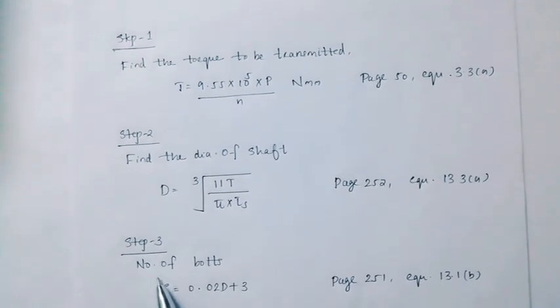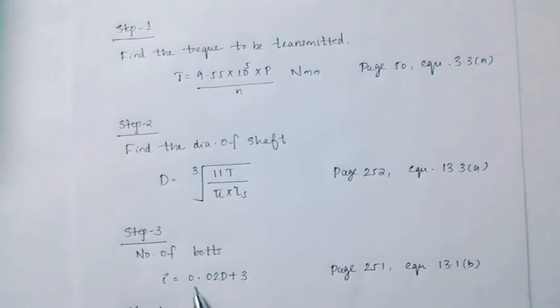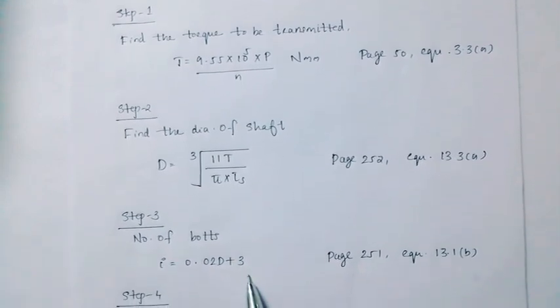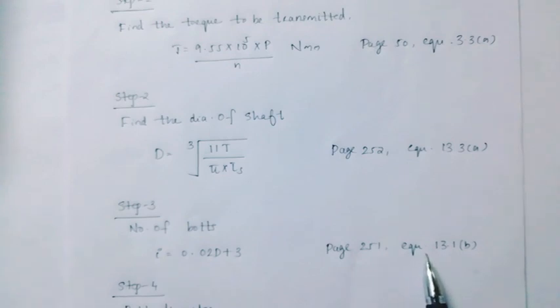Next, step 3: Number of bolts. i equal to 0.02 D plus 3. Page number 251, equation 13.1B.